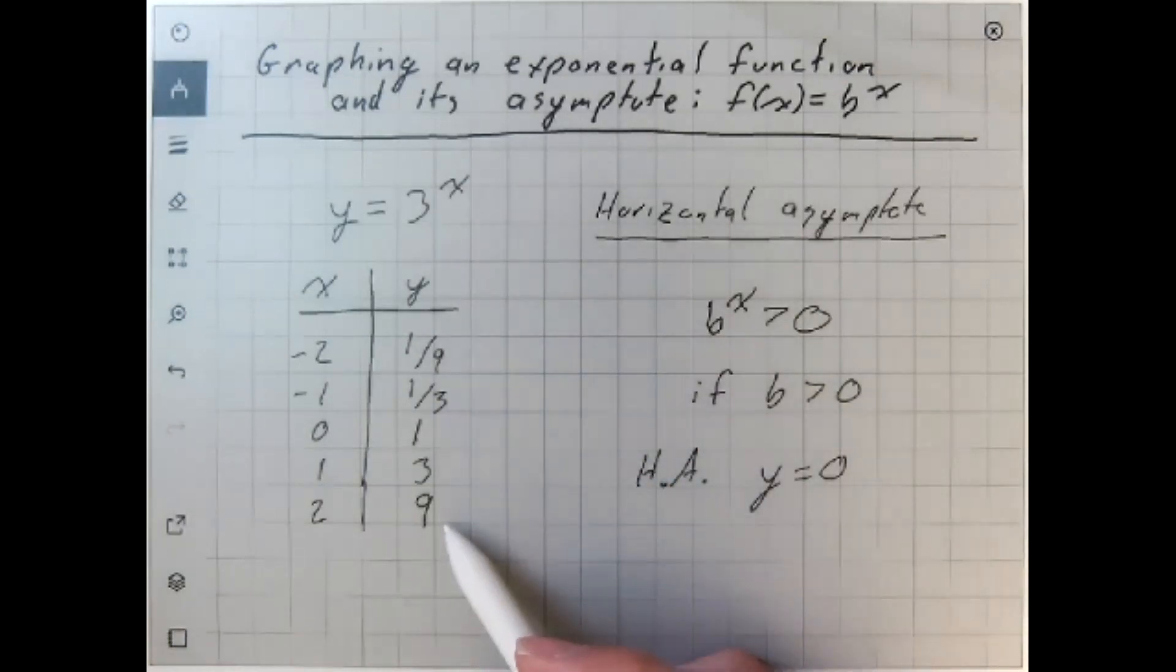But we're going to have these five points, we're going to have this asymptote. If we plot those things, we will have the graph of our function.